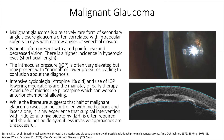On exam, patients often present with a red painful eye and decrease in vision. There is a higher incidence of malignant glaucoma in hyperopic eyes with short axial length. The intraocular pressure is often very elevated, but may present with normal or lower pressures, leading to confusion about the diagnosis.